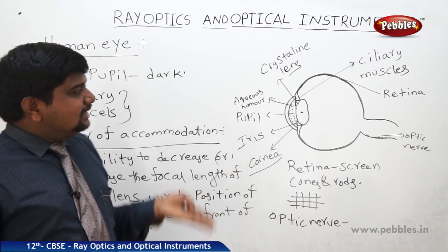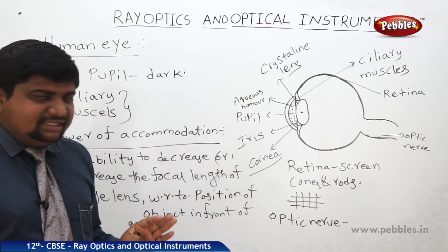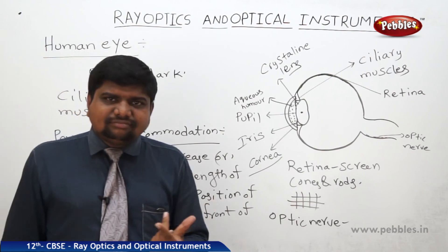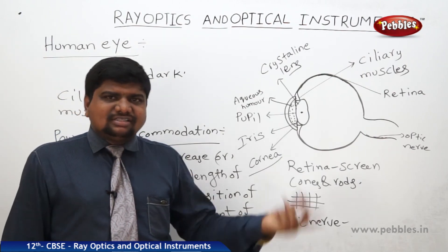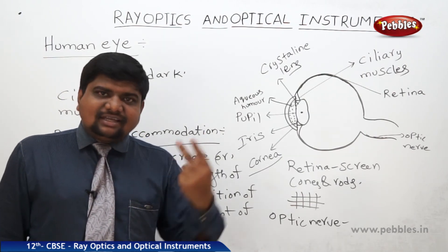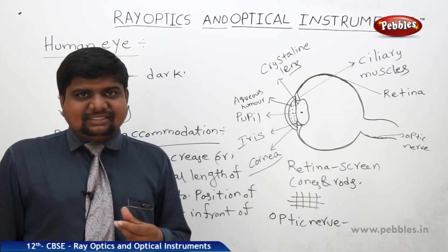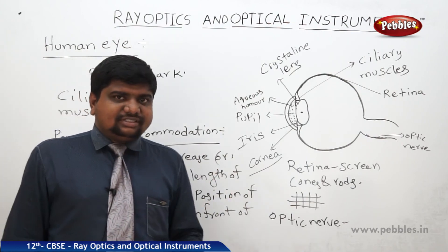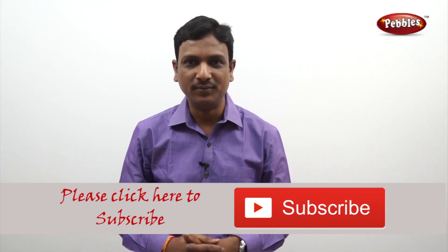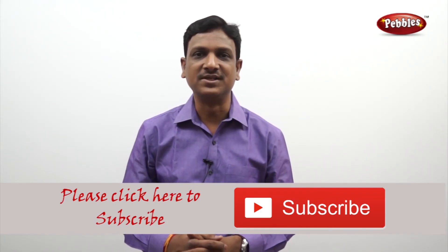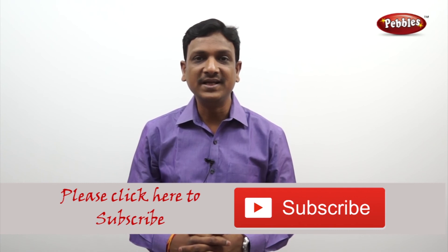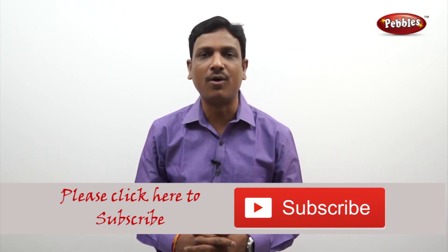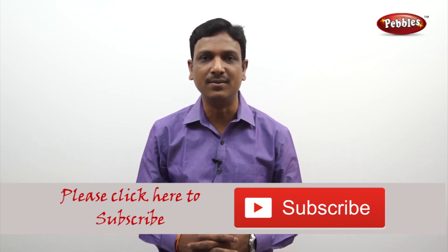There are some defects of the human eye — long-sightedness, short-sightedness, and color blindness — which we are going to discuss. If you like this video, please give a thumbs up and subscribe to our channel to get more videos on the CBSE syllabus.